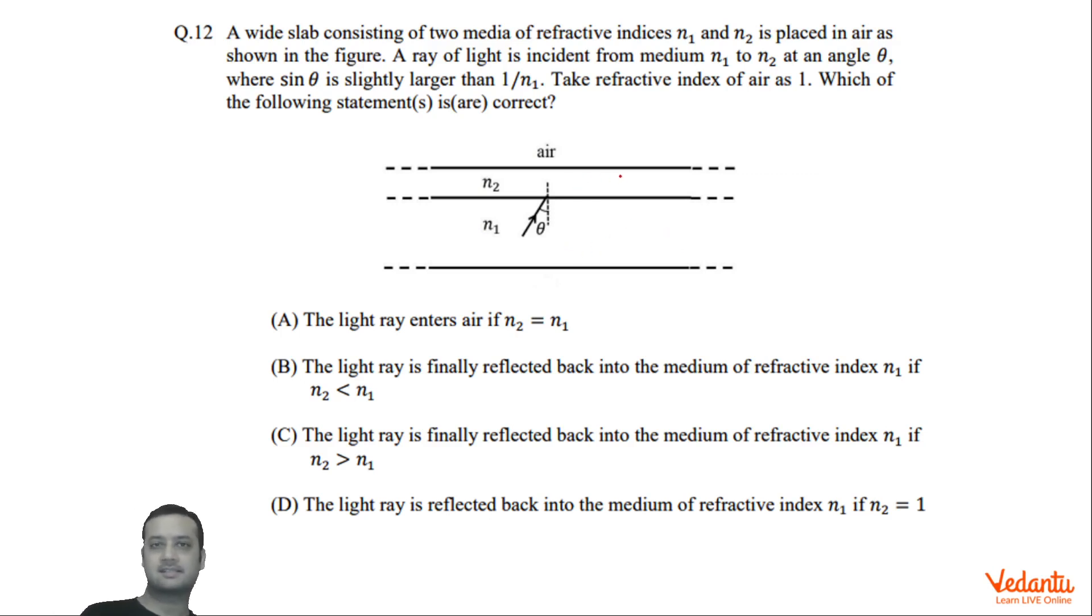There's a slab which consists of two refractive indices. That means basically this is made up of two different medium, N1 and N2. And here it is air. A ray is coming at an angle theta with respect to the normal drawn on N1 and N2. It is given that sin theta is slightly more than 1 by N1. The refractive index of air is 1.